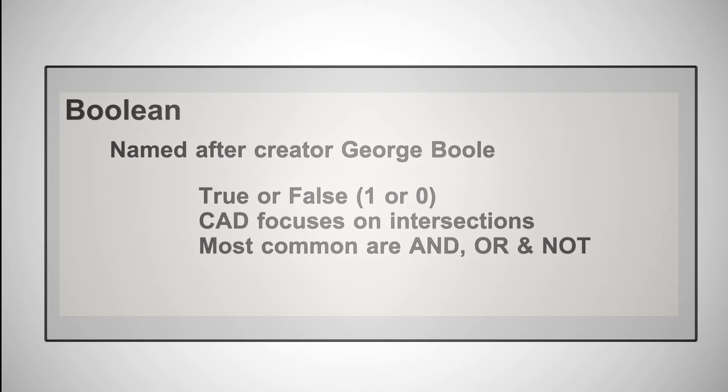In CAD, Boolean focuses on the intersections or overlaps between models existing in the scene. You apply a Boolean operation of AND, OR, or NOT to two overlapping objects, and what will happen is the logic will define true and false values for where these objects overlap and then perform an action accordingly.